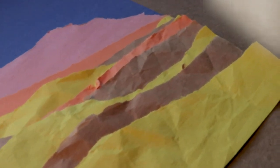Tearing the paper will give your landscape more texture. Use at least two or three different colors for the ground.